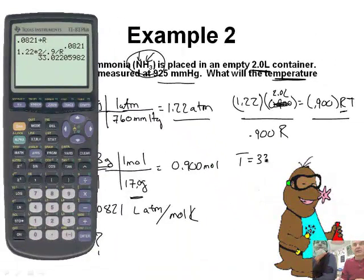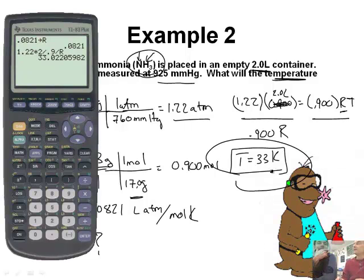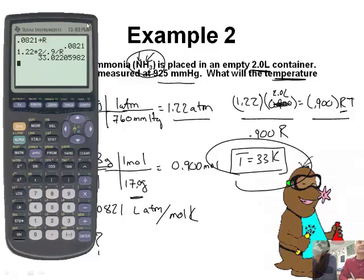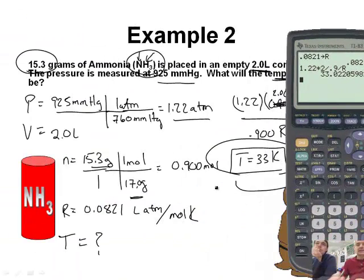T equals 33 — and that's in Kelvin. 33 Kelvin is a very, very cold temperature. I would actually be surprised if ammonia is still a gas at 33 Kelvin; it's probably a liquid. But that's how you solve that problem.